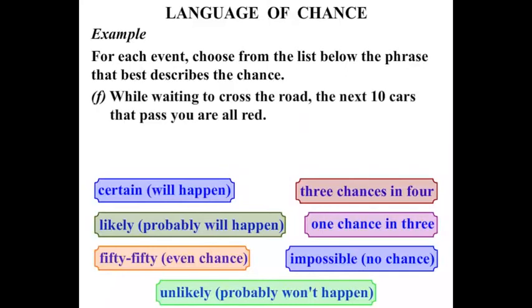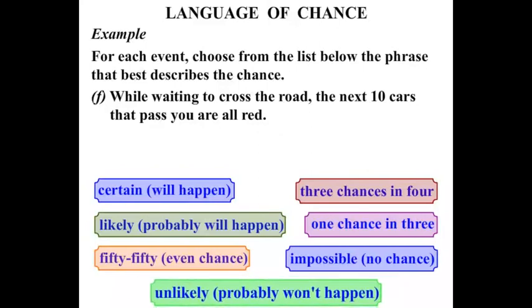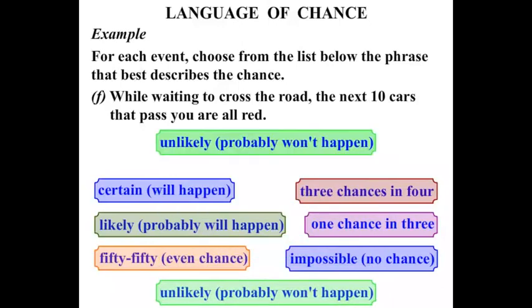While waiting to cross the road the next 10 cars that pass you are all red. What are the chances of that? Well it probably won't happen, so it's unlikely. We wouldn't say it's impossible. There is a chance that it would happen, but it's very unlikely.